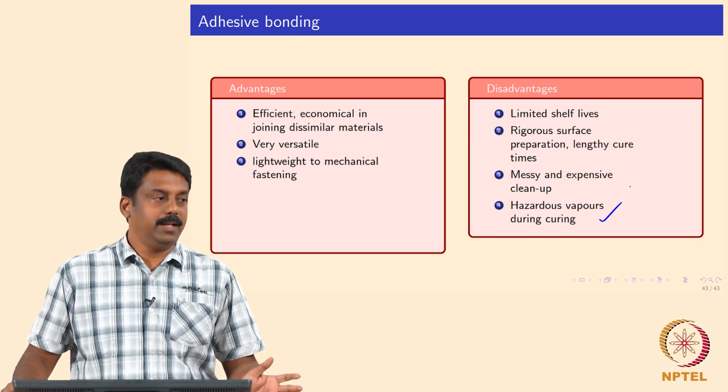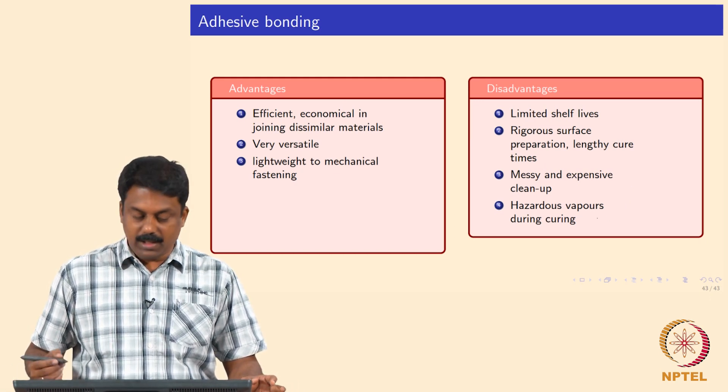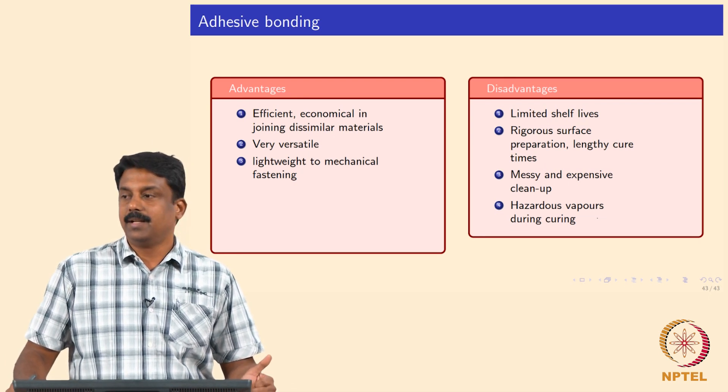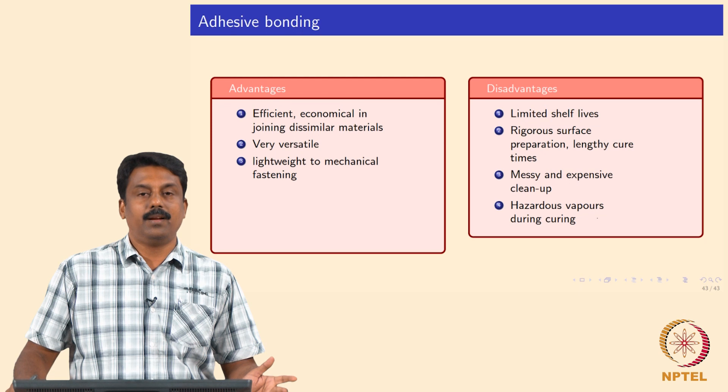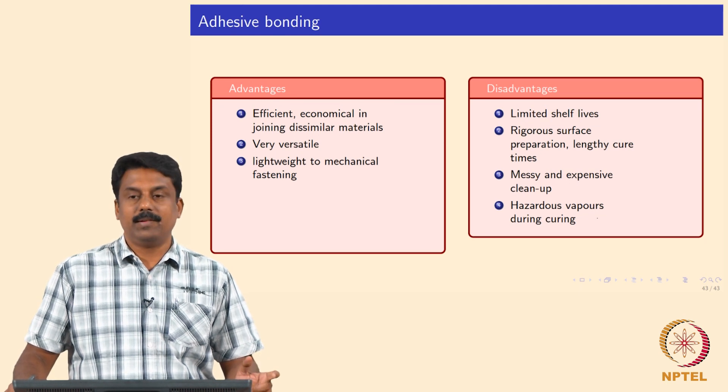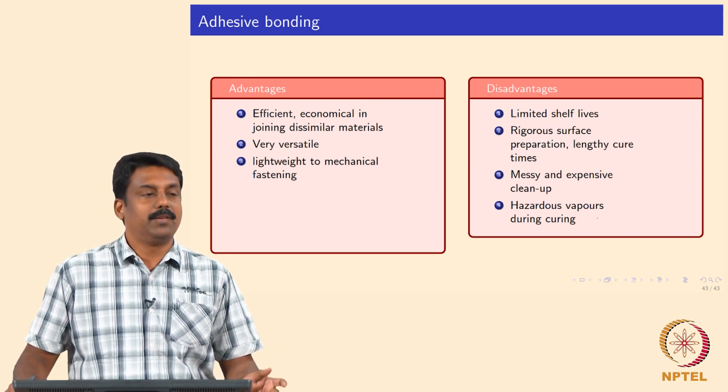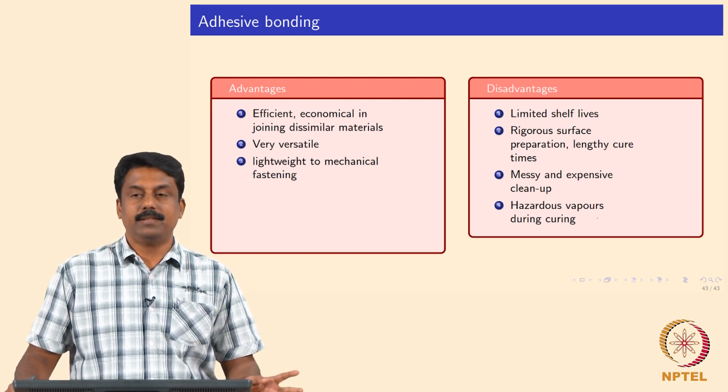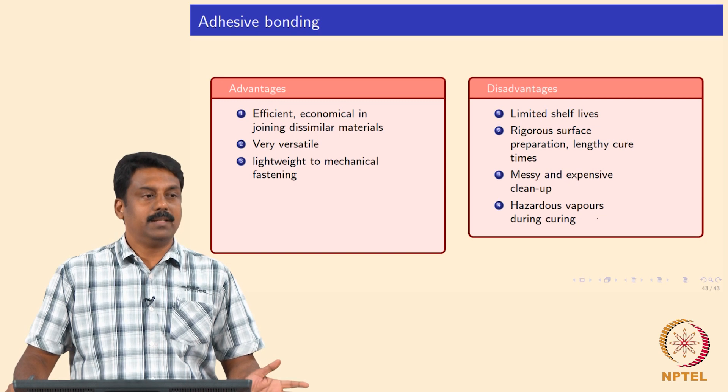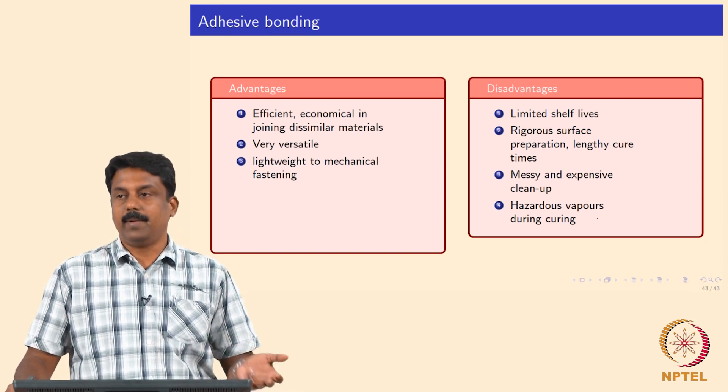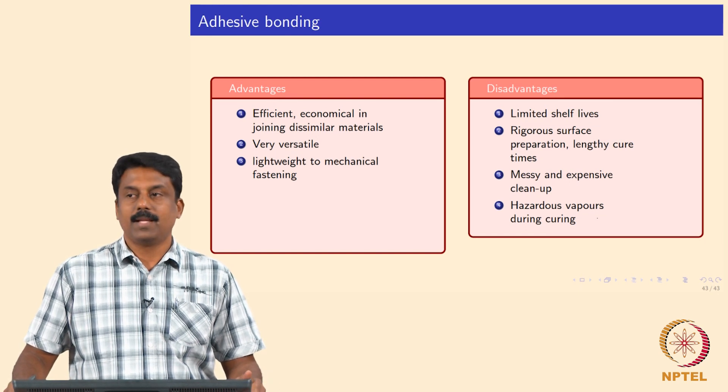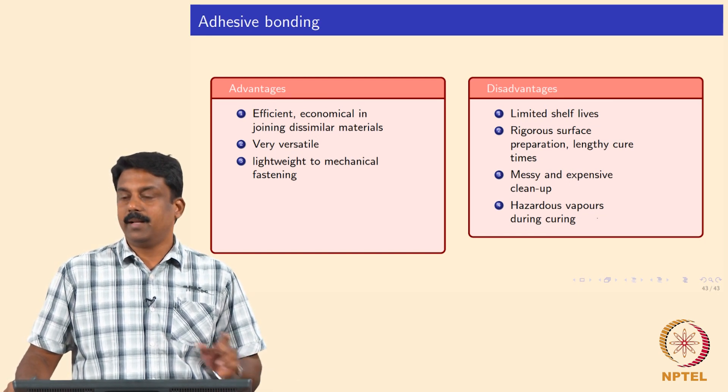Adhesive bonding is mainly used for thermosetting polymers. We use three principles: adsorptive, electrostatic, or diffusive reactions to make joints using adhesives. Based on the type of adhesives, we can classify them by physical form, chemical type, curing mechanism, or function. We will end up the processes. Thank you very much.